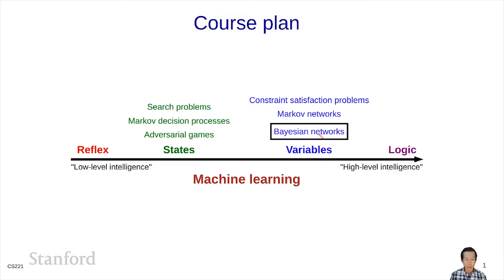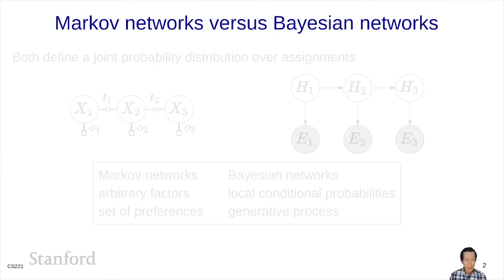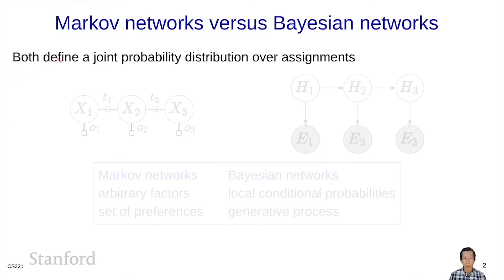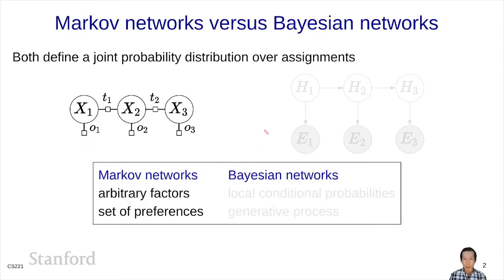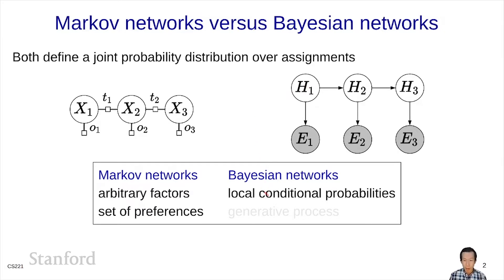Bayesian networks were developed by Judea Pearl in the mid-1980s and have evolved into the more general notion of generative modeling that we see today. Before diving in, it's helpful to compare and contrast with Markov networks. Both define a probability distribution over assignments to a set of random variables, but the approach is very different. In a Markov network, you think in terms of specifying a set of preferences and throw factors encoding those preferences into the network. A Bayesian network requires a more coordinated approach: the factors are local conditional distributions, and we think about a generative process by which each variable is set based on other variables in turn.